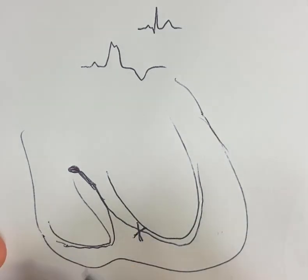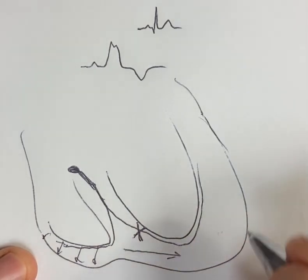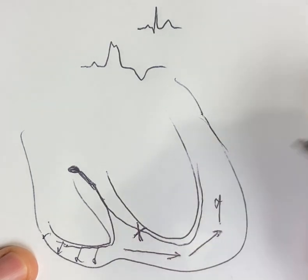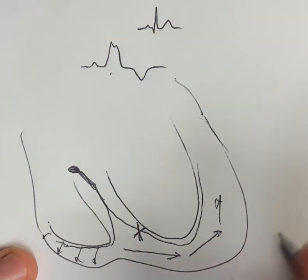And whereas the right ventricle depolarizes as expected, the left ventricle ends up depolarizing kind of lengthwise. And that's why it takes longer and leads to a wide QRS.